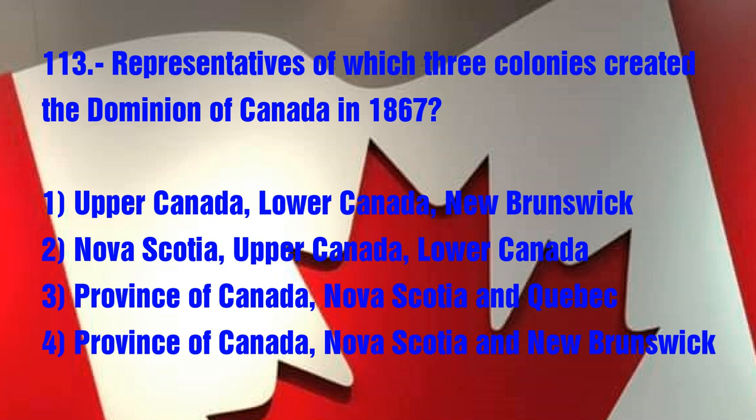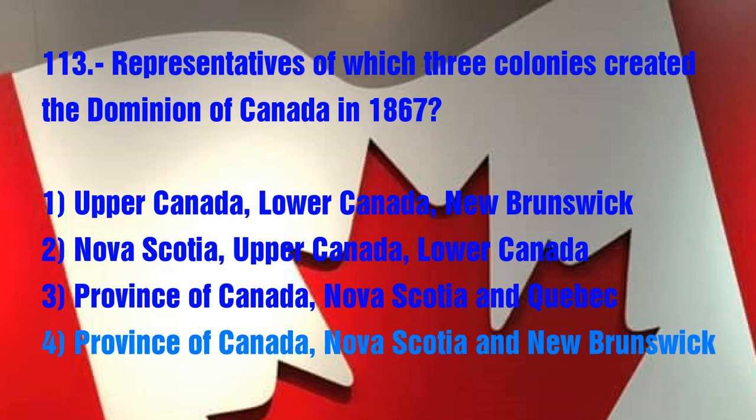Question No. 113. Which provinces were the original ones at Confederation? 1. Upper Canada, Lower Canada, New Brunswick, 2. Nova Scotia, Upper Canada, Lower Canada, 3. Province of Canada, Nova Scotia, and Quebec, 4. Province of Canada, Nova Scotia, and New Brunswick. The answer is 4. Province of Canada, Nova Scotia, and New Brunswick.